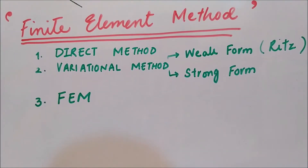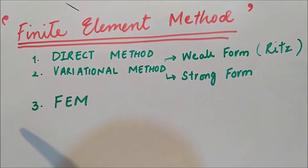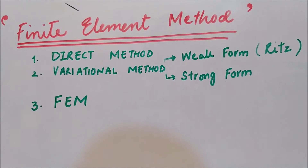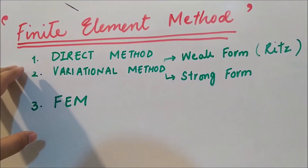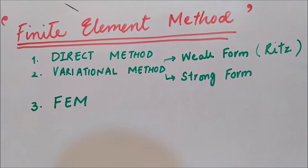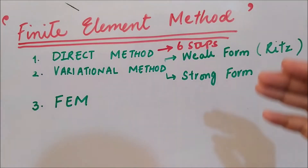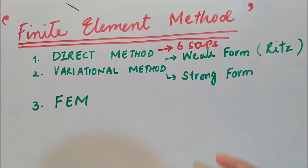We will definitely build a clear picture of how we get towards FEM. We will start with the direct method, which is the basic method. A structural or bar problem roughly has six steps. In the next video we will solve a problem covering all six steps of the direct method, and see what each step involves and why it is called the direct method.